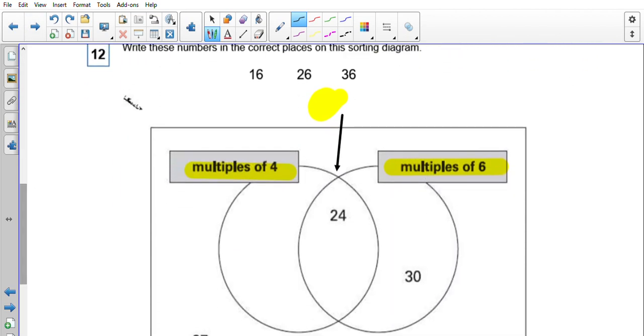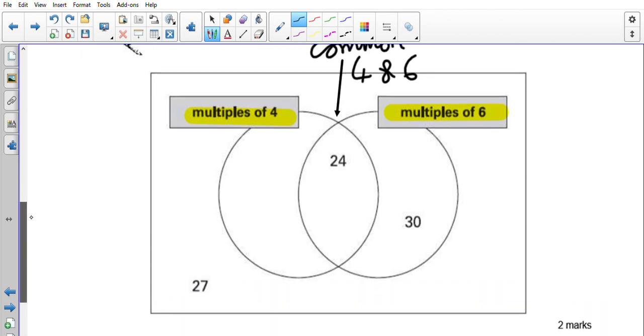So this here is going to be a common multiple of both 4 and 6. So if I look at 24, 24 is in the 4 times table, 24 is in the 6 times table, fine. Absolutely fine to get that done. So we understand that.